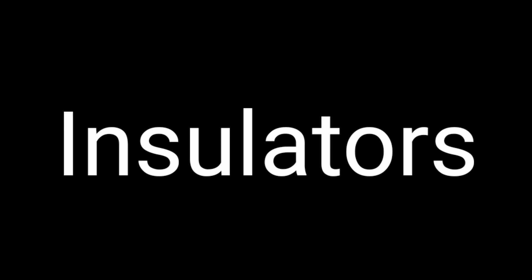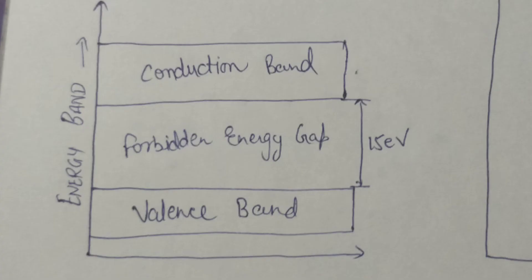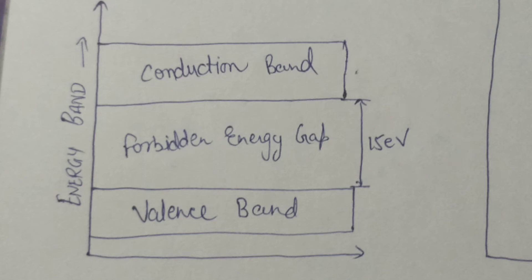First, let's talk about insulators. Insulators are materials in which conduction cannot take place due to the large forbidden gap — examples include wood and rubber. The forbidden energy gap is very large, and valence band electrons are bound tightly to atoms. The value of the forbidden energy gap for an insulator is approximately 10 electron volts.